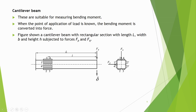Now suppose we make a cantilever beam type of structure — we can then measure the bending moment. When the point of application of load is known, the bending moment is converted into force. Fixing the cantilever on the left and applying load on the right produces deflection, with maximum strain near the fixed support proportional to distance L and force Fq. If we know the distance L, we can find the force.